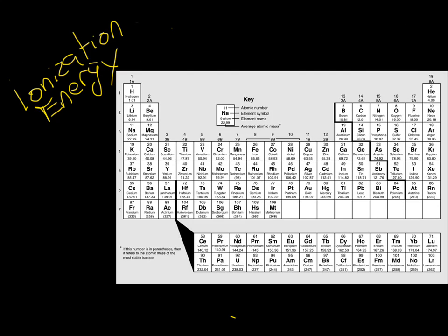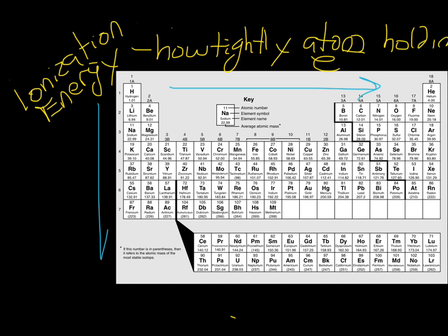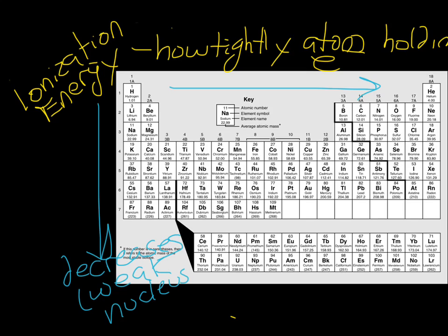Let's review ionization energy, which is how tightly an atom is holding its electrons. Let's review the trend going across and down. Going down, ionization energy decreases — they're not holding their electrons as tightly because we've got a weaker nucleus. And going across, it increases because we have a stronger nucleus.